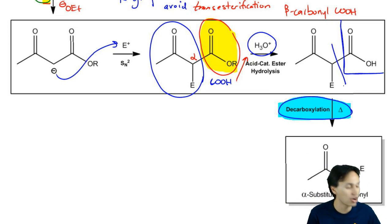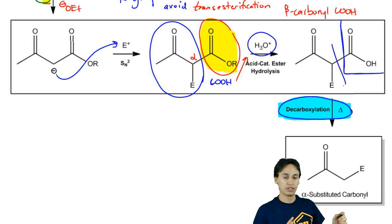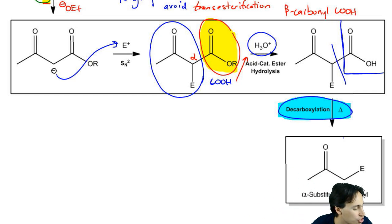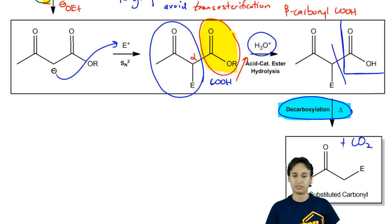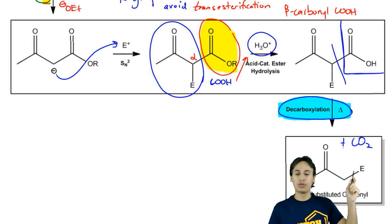You decarboxylate. That would take this entire thing off and it's going to just leave what's left over. It's going to leave your alpha-substitute carbonyl plus you're going to get CO2 gas. So you have your alpha-substitute carbonyl, your CO2 gas, and lo and behold,